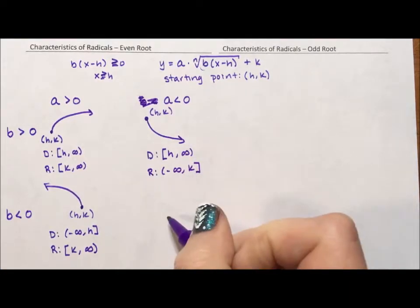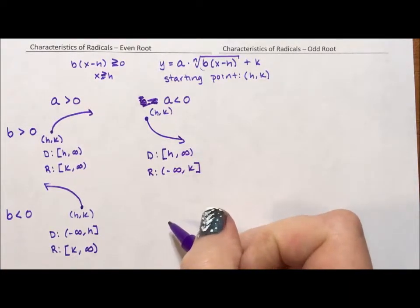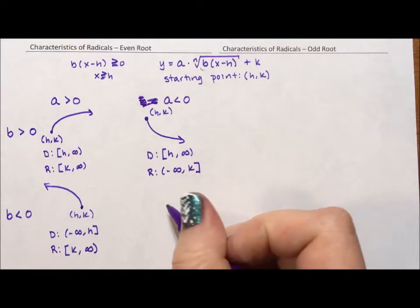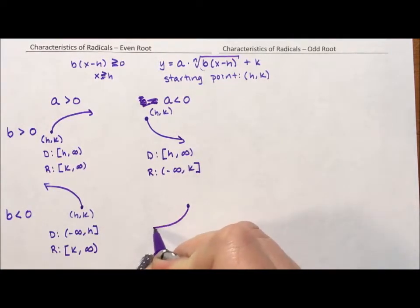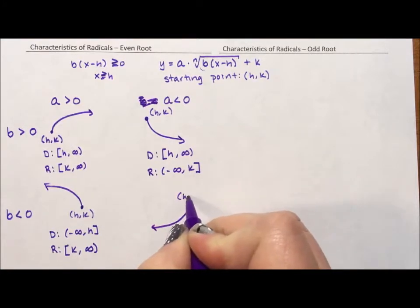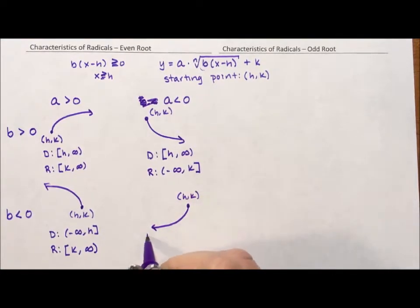And our last area is if they're both negative. So they're both going in a negative direction. We're going down and back. We start here. We go this way with our starting point of (h,k). Our domain is negative infinity to h. Our range is negative infinity to k.